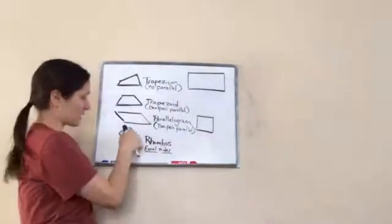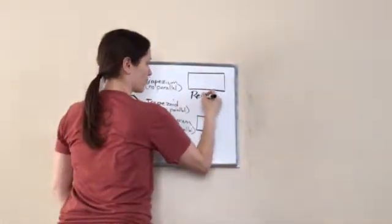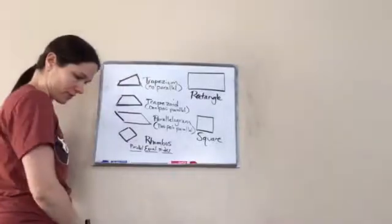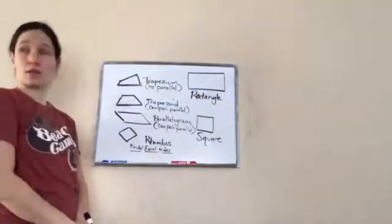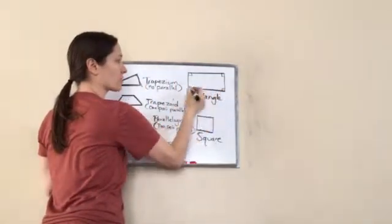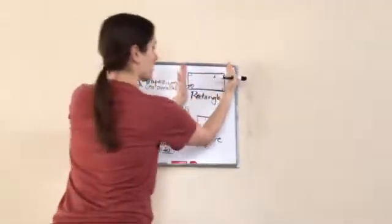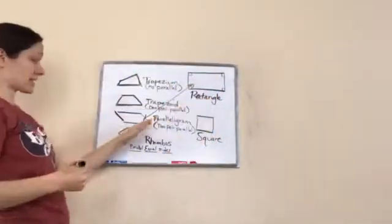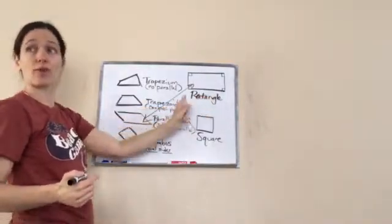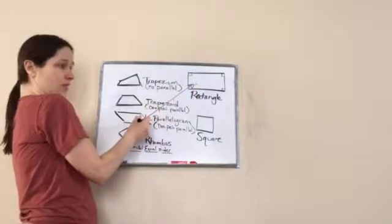This one is a rectangle, and this one is a square. Let me explain what is different about each. A rectangle is a parallelogram but has right angles — you see how they're perfect square angles. That's what makes this different. It's parallel here and parallel here, but what makes it a rectangle is the right angles. Rectangle — right angles. That's how I remember it.